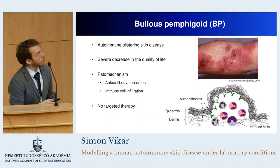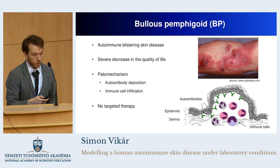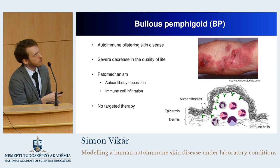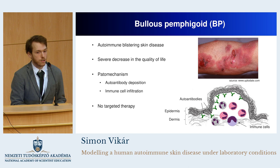It's called bullous pemphigoid, which is a so-called autoimmune blistering skin disease. In this picture, you can see the most characteristic lesions of the disease — these thick blisters on the skin. These lesions cause very unpleasant symptoms such as pain and itching, and this disease results in a severe decrease in the quality of life of the patient.